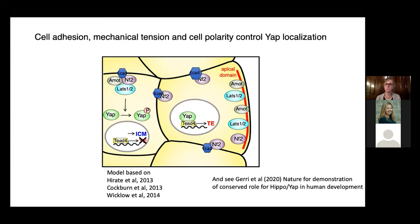We now have a pretty good model from these and other studies. As cells become polarized on the outside, polar cells localize some components of this complex to the apical domain so that LATS kinase is not active — YAP enters the nucleus and activates CDX2. In the inside cells, without polarity, LATS is active, YAP is phosphorylated, and you don't activate trophoblast. Instead, you activate the inner cell mass pathway. This is basically how we think the first lineage decision is made — related to cell polarity, cell position, and mechanical tension.